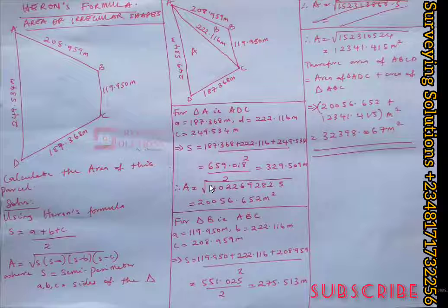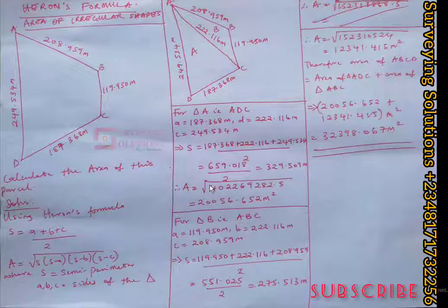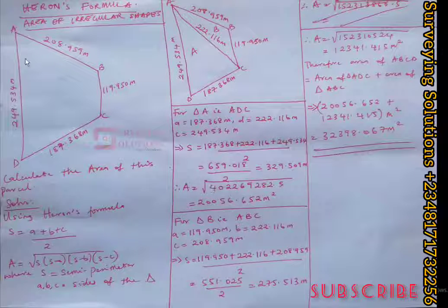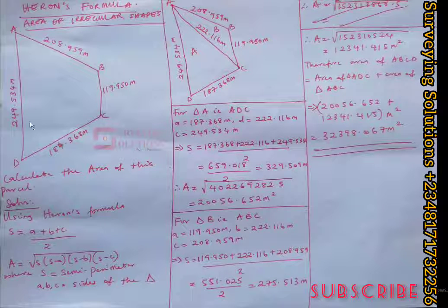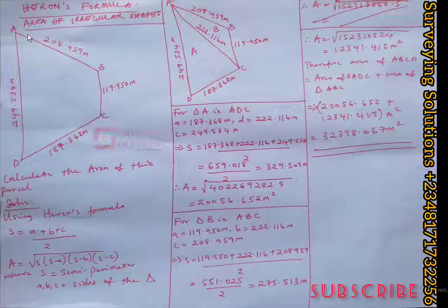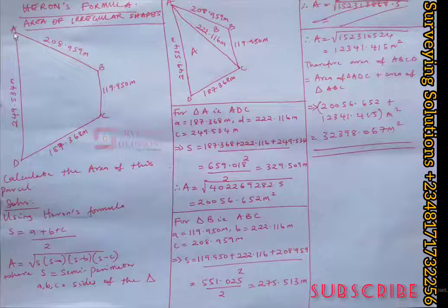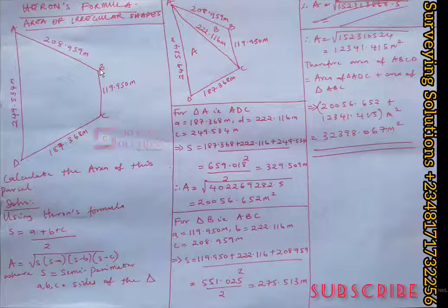That's one of the basics. When you have an irregular plot — something like this — we have A, B, C, D. We have lengths: AB = 28.959, BC = 119.795, CD = 7.368, and DA = 249.534, and you are asked to calculate the area of this plot without being given coordinates.